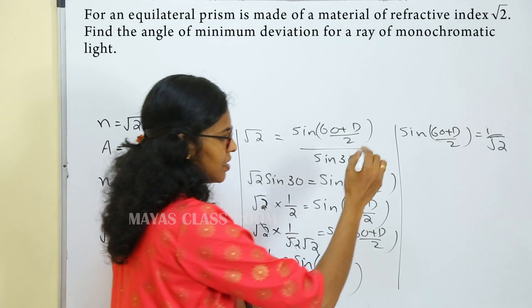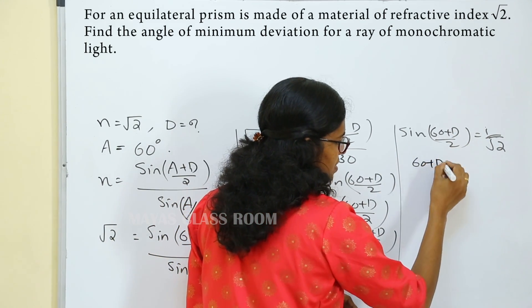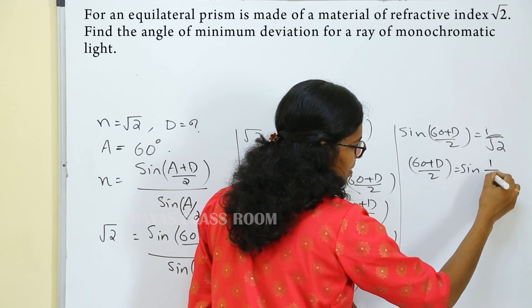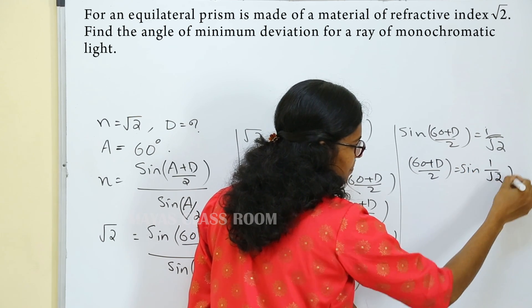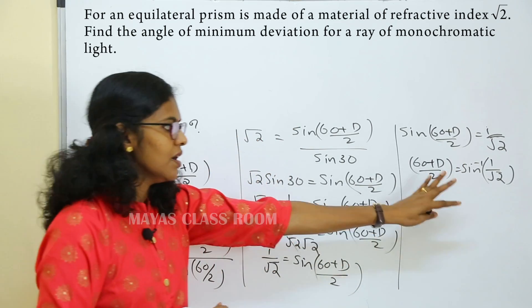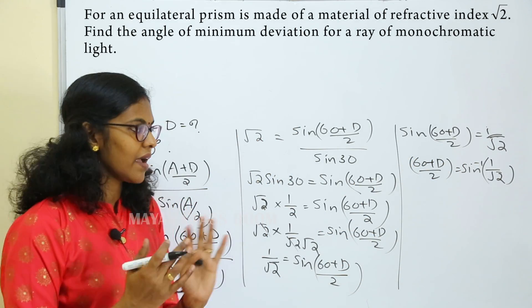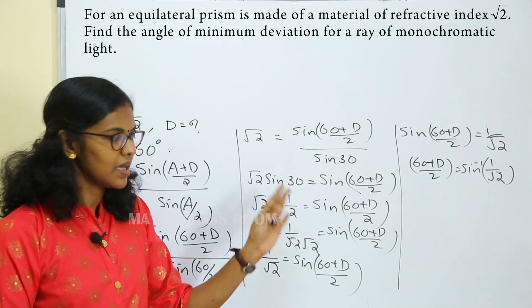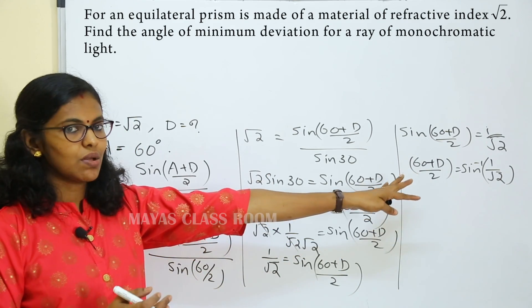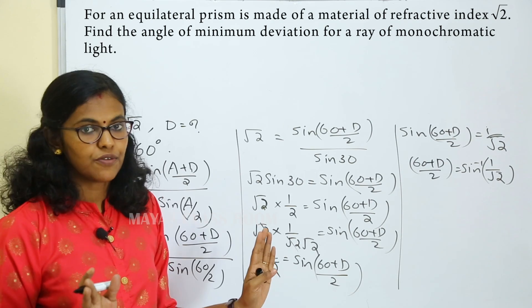Taking sin inverse: 60 plus D divided by 2 is equal to sin inverse of 1 by root 2. What angle has sin equal to 1 by root 2? That is 45 degrees.